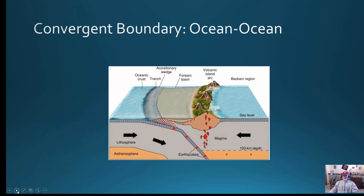Another type of convergent boundary is ocean-ocean, seen in the western Pacific, where you have two oceanic plates. The one with greater density will subduct. Volcanoes are always formed on the non-subducting plate, which in every instance is closer to the continents. Trenches are being formed here — the Marianas Trench is a good example, and you looked at the Challenger Deep.